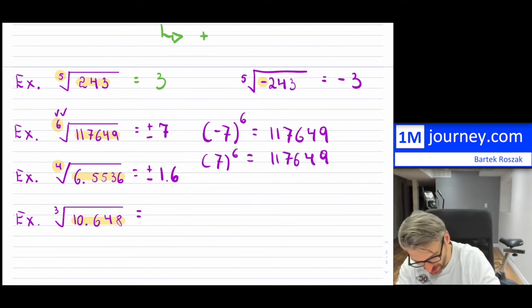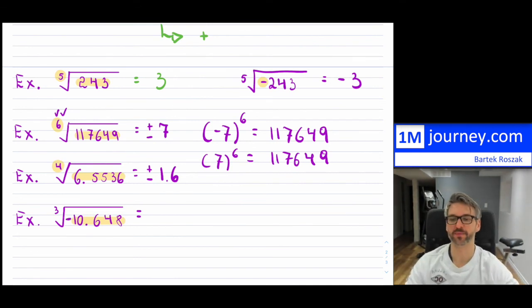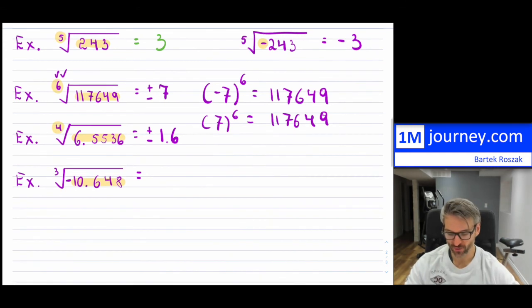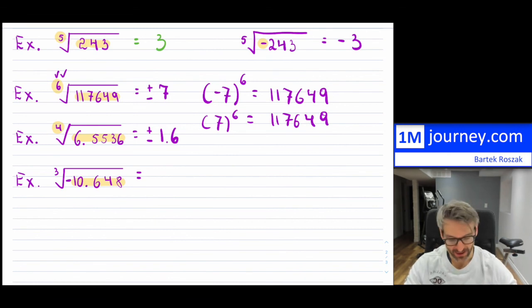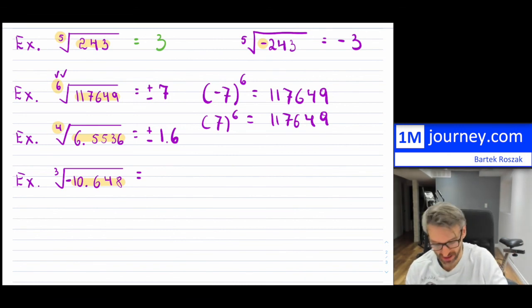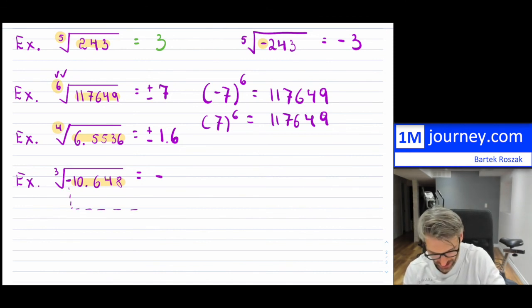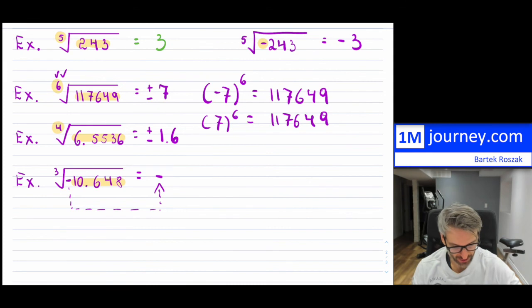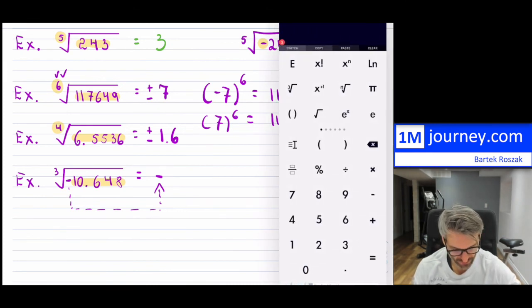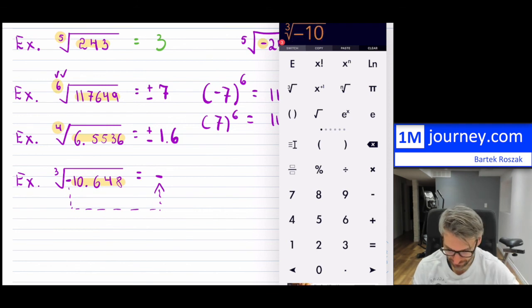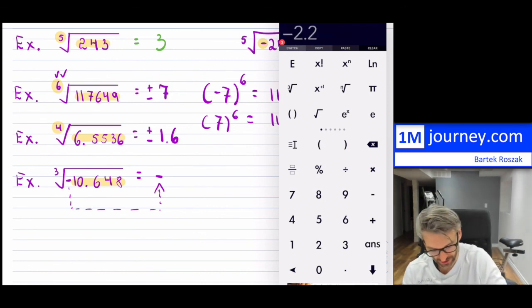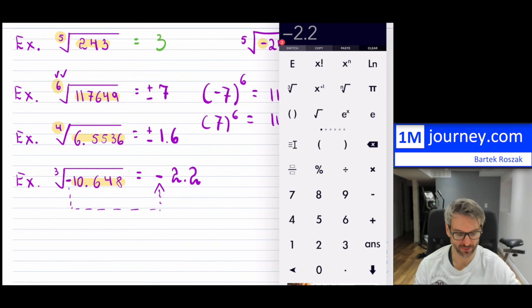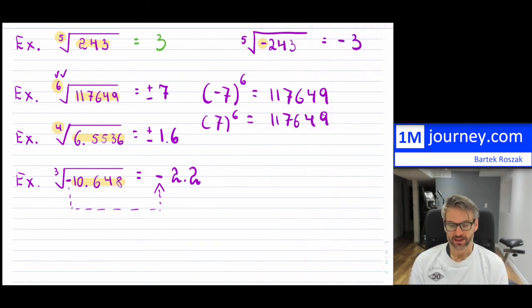Now changing the last example: if I put a negative radicand — the third root of negative ten-point-six-four-eight — since three is odd and the radicand is negative, the answer will be negative. You can check this yourself: the third root of negative ten-point-six-four-eight equals negative two-point-two.